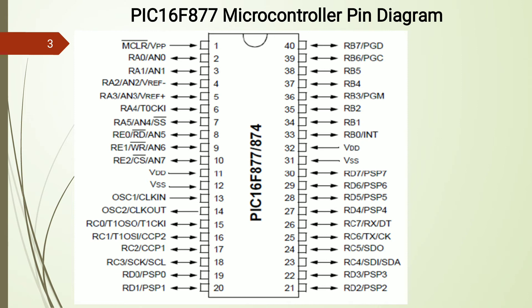For Port C and Port D, the pins are interleaved in the diagram: the first four pins of Port C are followed by the first four pins of Port D, then the upper nibble of Port C and then the upper nibble of Port D. So pin 15 starts with RC0, RC1, RC2, RC3, then RD0, RD1, RD2, RD3, then RC4, RC5, RC6, RC7, and then RD4, RD5, RD6, RD7.